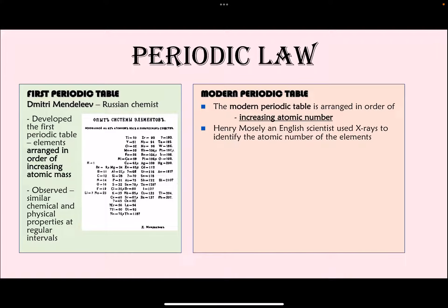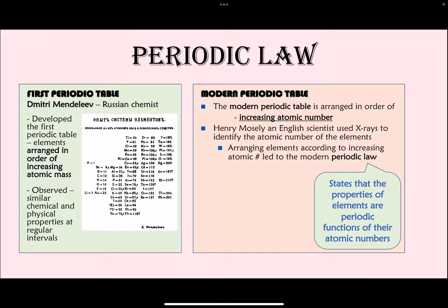Henry Moseley was the person who used X-rays to determine the atomic number of elements. Once again it was noticed that elements have similar chemical and physical properties at regular intervals, and this led to the periodic law, which was the foundation for our modern periodic table.